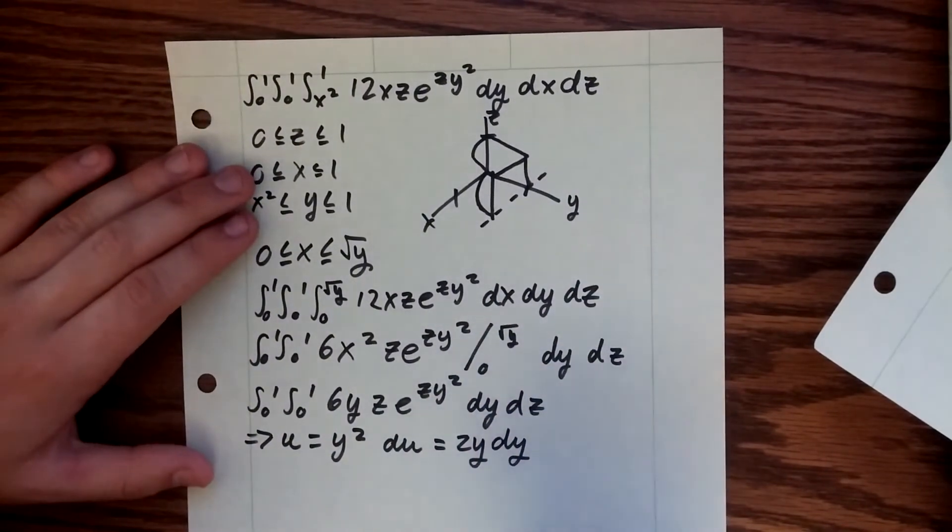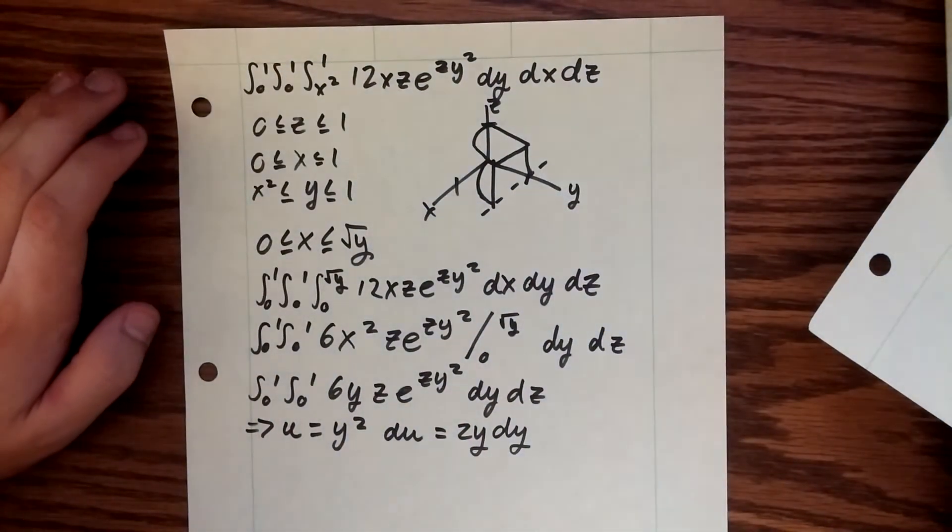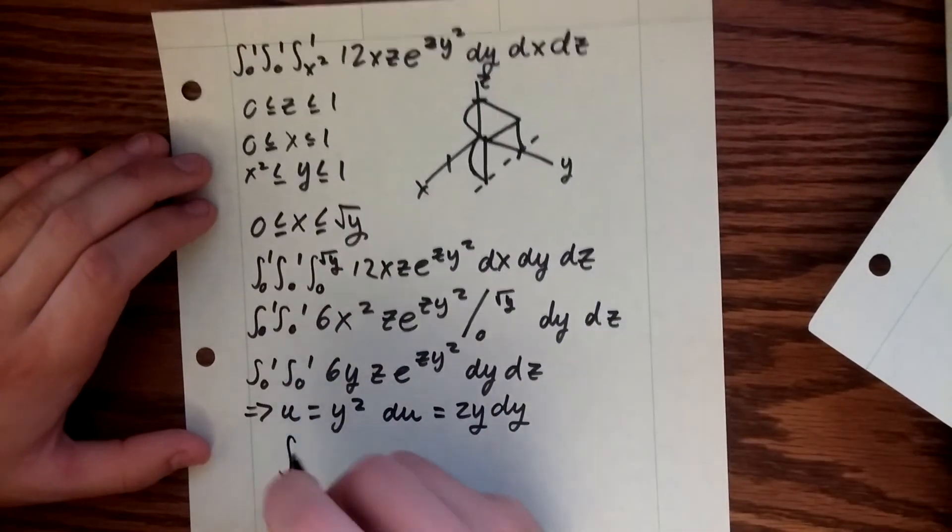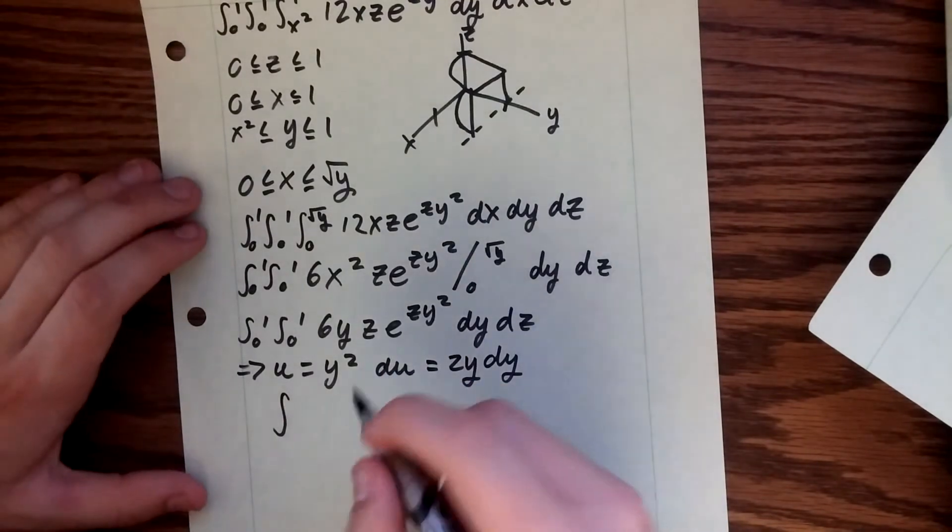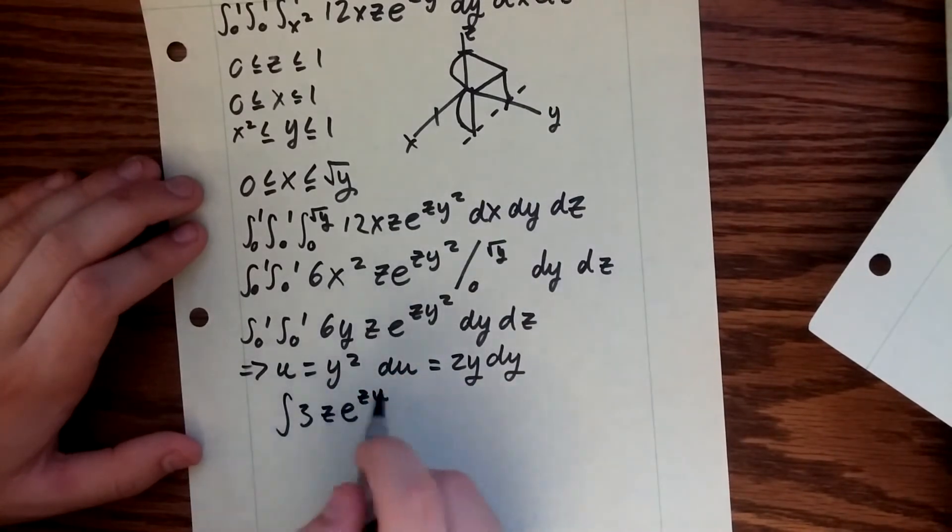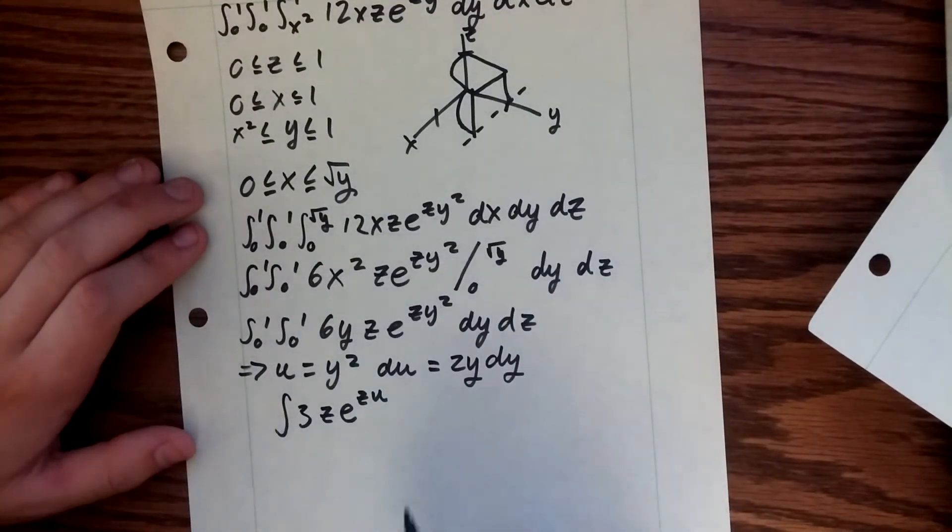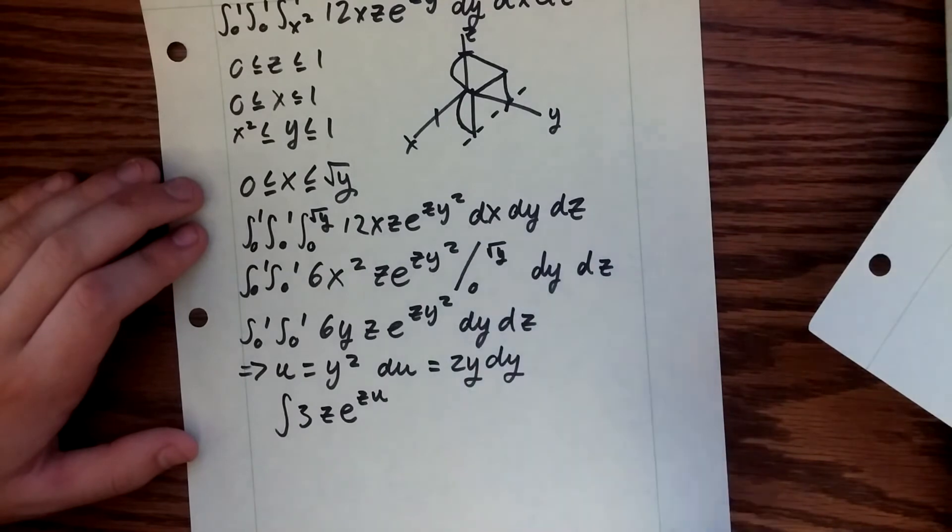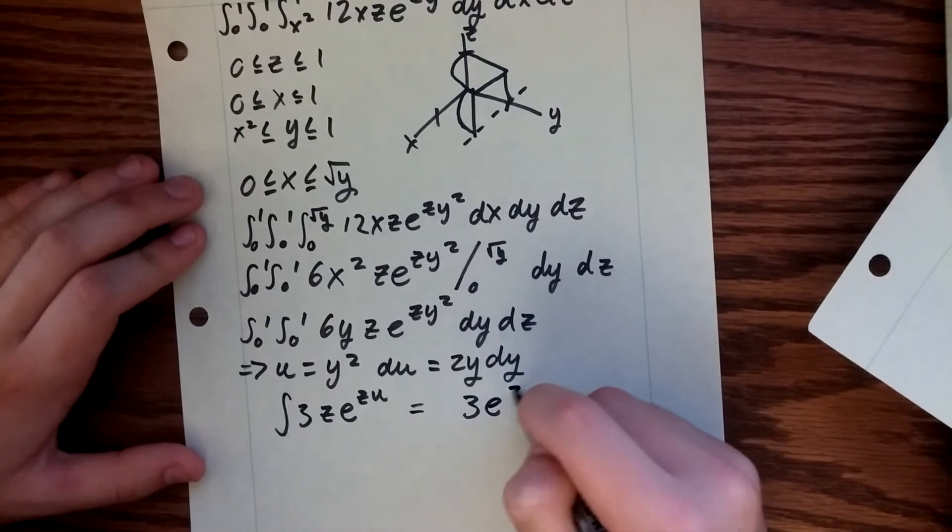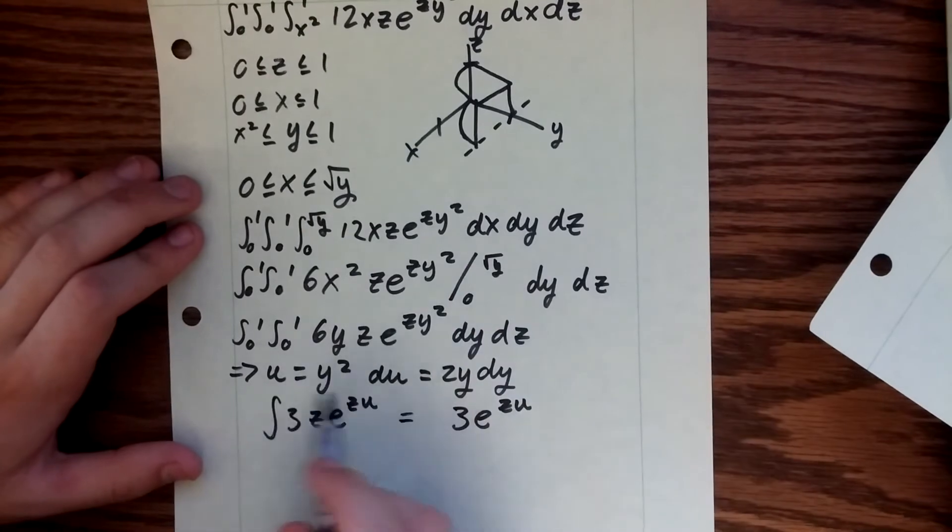And now we just evaluate our new integral using u-substitution. So that's going to be the integral of 3z e^(zu), and this whole thing is going to be what we're going to integrate over in our final integral. So if you integrate this with respect to u, you just end up with 3e^(zu), and then you just plug your u back in, and in this case u is y squared.